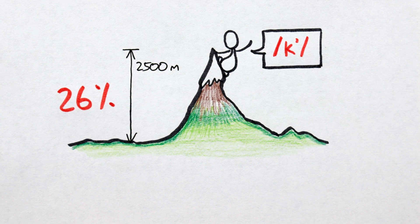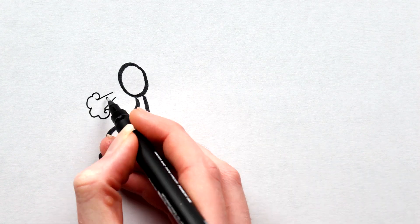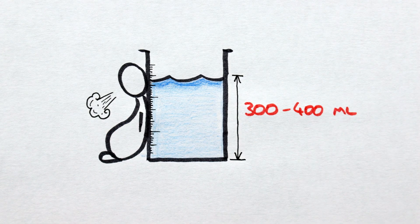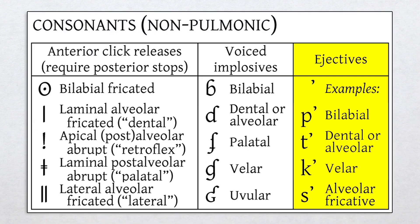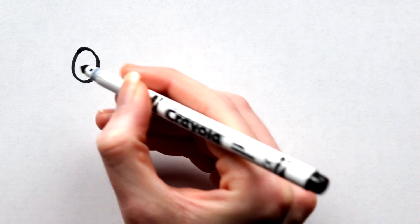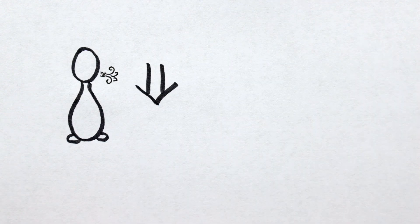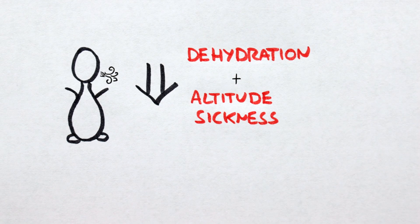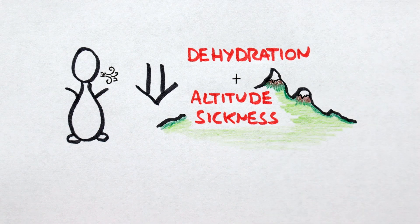Additionally, he theorizes that ejectives may help reduce water vapor loss. Humans typically lose between 300 and 400 milliliters of water vapor daily through exhaled breath. But ejectives don't require exhalation. Remember, they are non-pulmonic sounds. We can produce them with our breaths held. Reduce the amount you exhale while speaking and you reduce your water vapor loss, which would help combat dehydration and altitude sickness. All pretty advantageous stuff if you live high in the mountains.